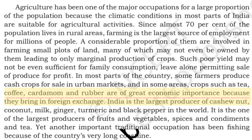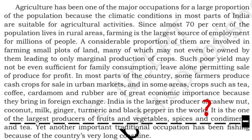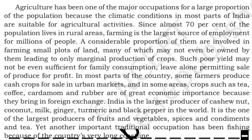Crops like tea, coffee, cardamom, and rubber are of great economic importance because they bring a lot of foreign exchange to our country. India is also the largest producer of cashew nuts, coconut milk, ginger, turmeric, and black pepper in the world. India is also the largest producer of fruits, vegetables, spices, condiments, and tea. Fishing is another traditional occupation because of the country's very long coastline.